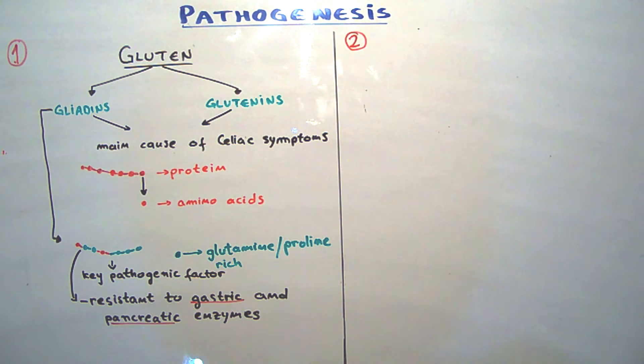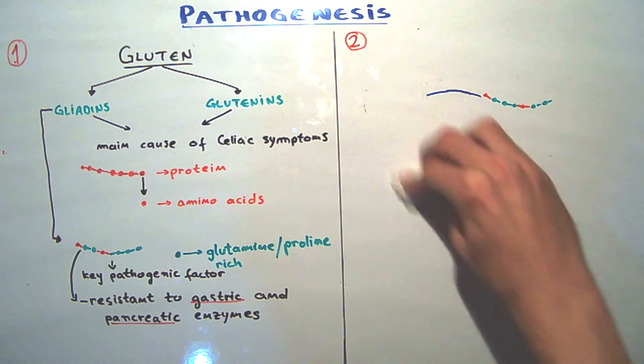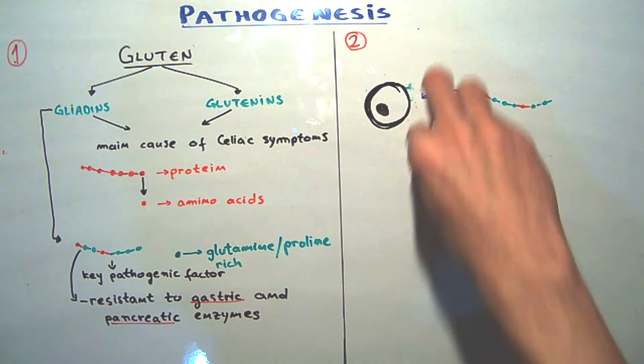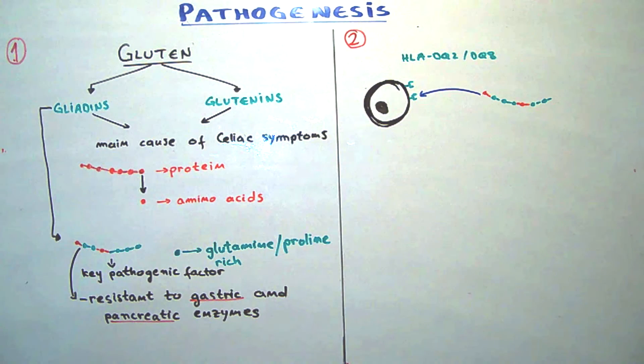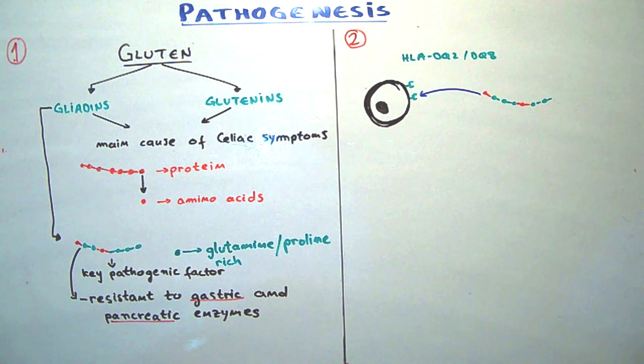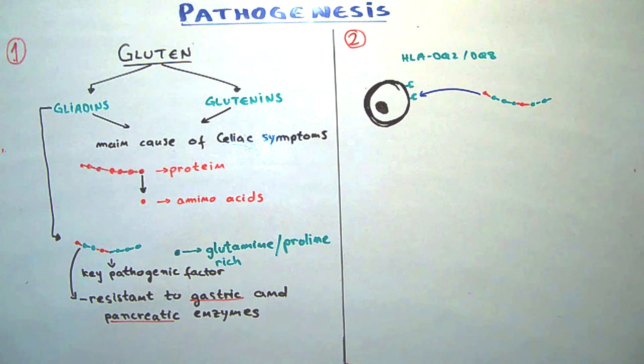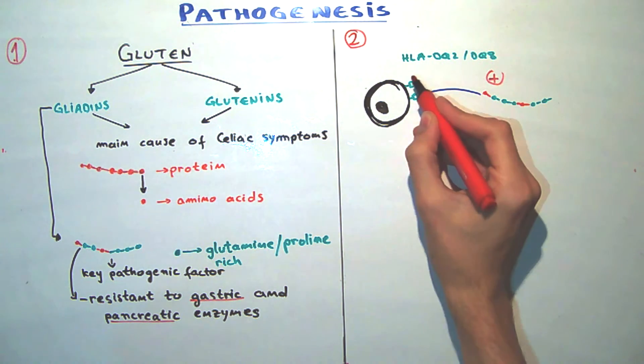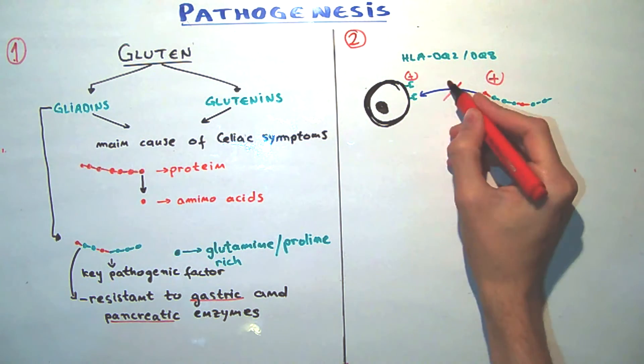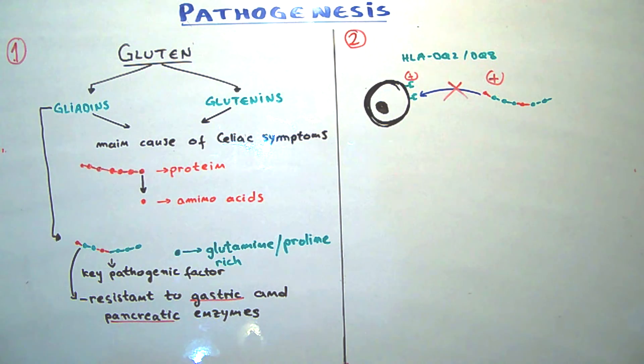Because the high proline content makes this protein resistant to gastric and pancreatic enzymes. Another thing that we should know is that these rich glutamine proteins bind to DQ2 and DQ8, which are represented on the surface of the antigen-presenting cells. But wait, if someone who knows about this is watching the video will say, hmm, the molecules that bind to HLA molecules should be negative, and gliadin is mostly positive, so there cannot be a connection.